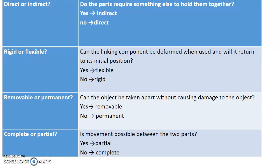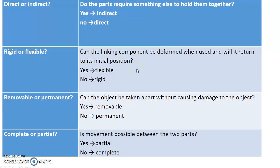To summarize the questions you need to answer when analyzing a link: Is it direct or indirect — do the parts require something else to hold them together? Is it rigid or flexible — can the linking component be deformed when used and return to its initial position? Is it removable or permanent — can the object be taken apart without causing damage? And is it complete or partial — is movement possible between the two parts?